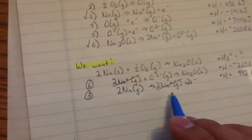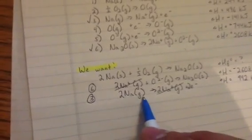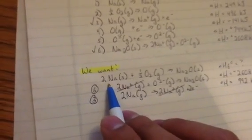So now I can start crossing things out. I can cross this out, because I have the same term down here. Now, so I have my two Na gas here. Do I want Na gas? No, I want Na solid. I want it in a solid form.